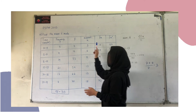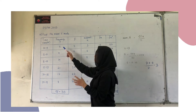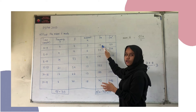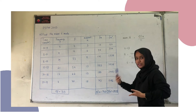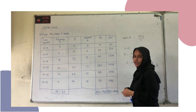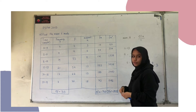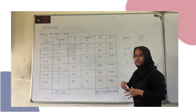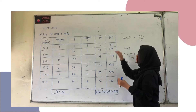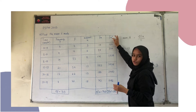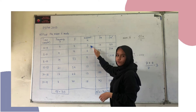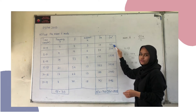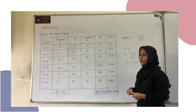For fx, you multiply the frequency by the midpoint. For example, 5 times 3 equals 15. For fx squared, note that the square applies to x, not to fx. So it is x squared times f — for example, 3 squared equals 9, times 5, gives 45.